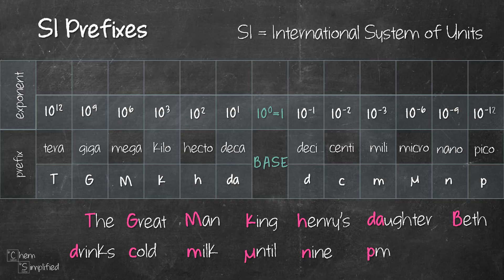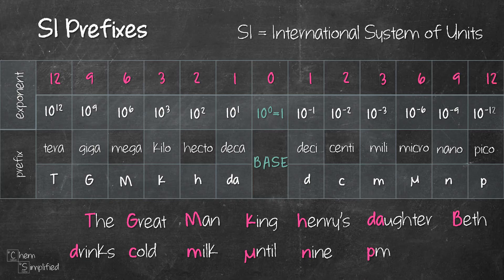To remember the exponent values, just remember: starting with base is 0. Then we go 1, 2, 3, and multiples of 3 — 6, 9, and 12. We do the same thing on the other side: 1, 2, 3, 6, 9, and 12. The only difference is you add a negative sign on the right-hand side.